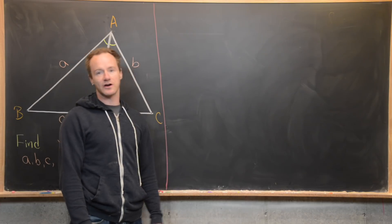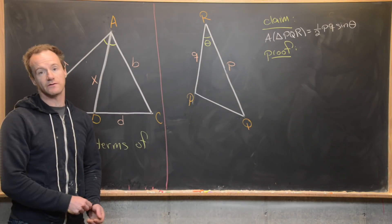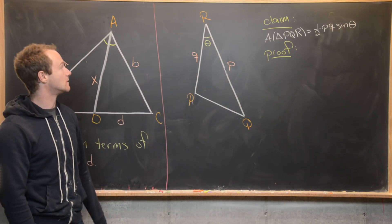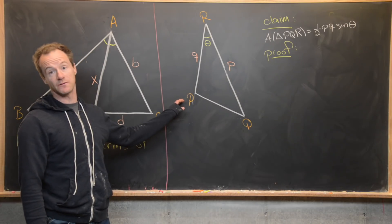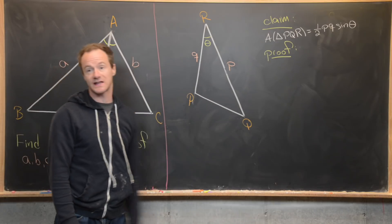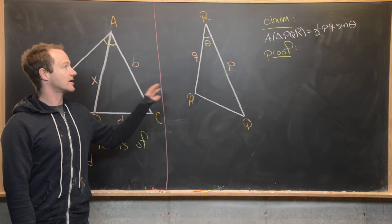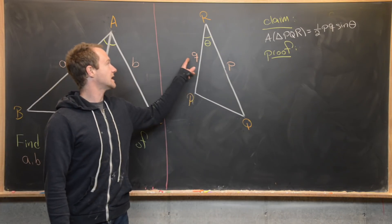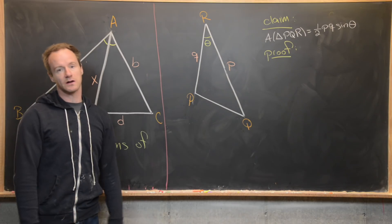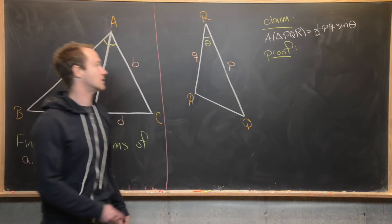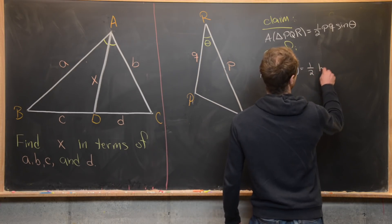The first result has to do with the area of a triangle. Let's get a picture on the board for that. Our first result has to do with the area of a triangle in terms of two side lengths and the angle. Let's say we've got a triangle PQR, with side length little p across from vertex P, side length little q across from vertex Q, and the angle between those two line segments is angle measure theta. The claim is that the area of triangle PQR is one half PQ times sine theta.